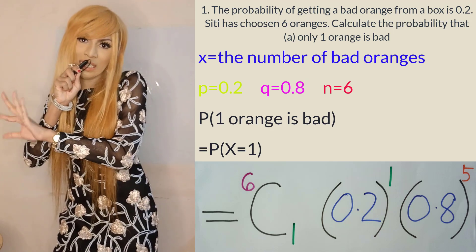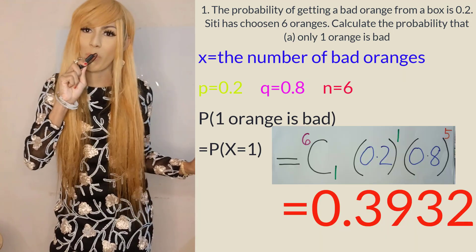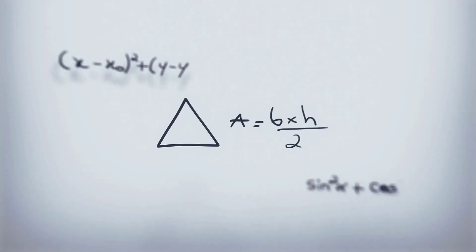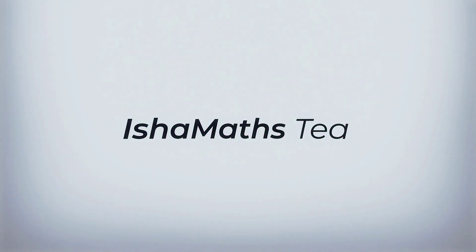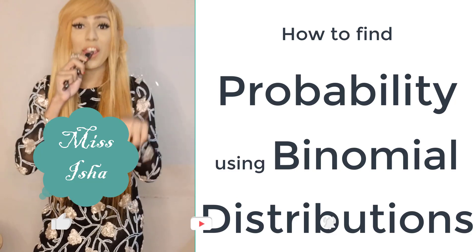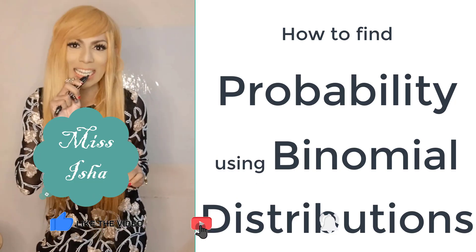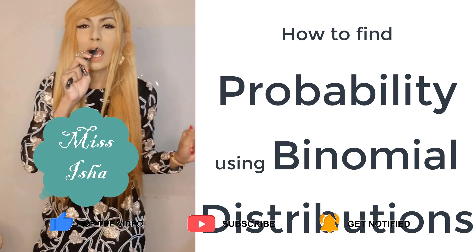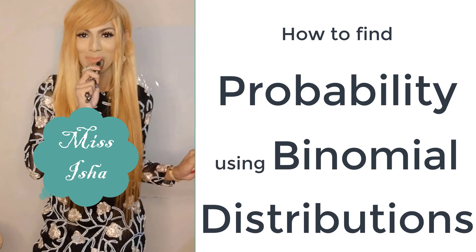Click P index in your calculator and you will get the answer, which is 0.3932. In this video, I'm going to explain how to find probability using the binomial distribution formula.